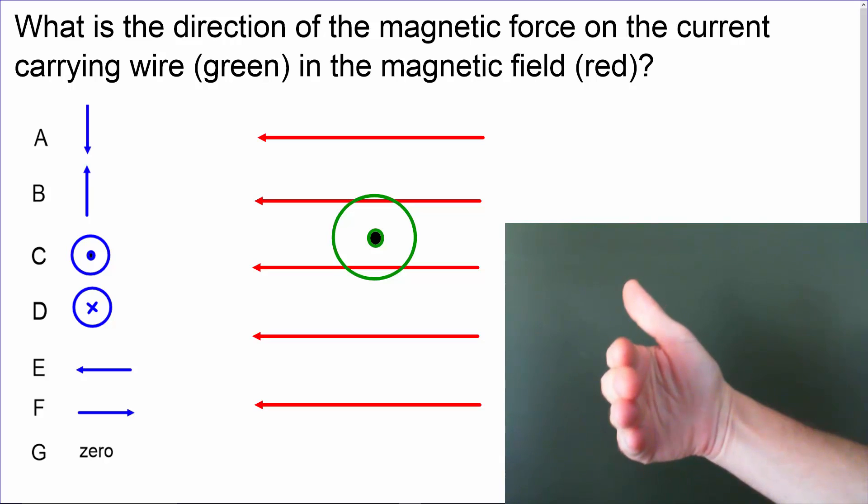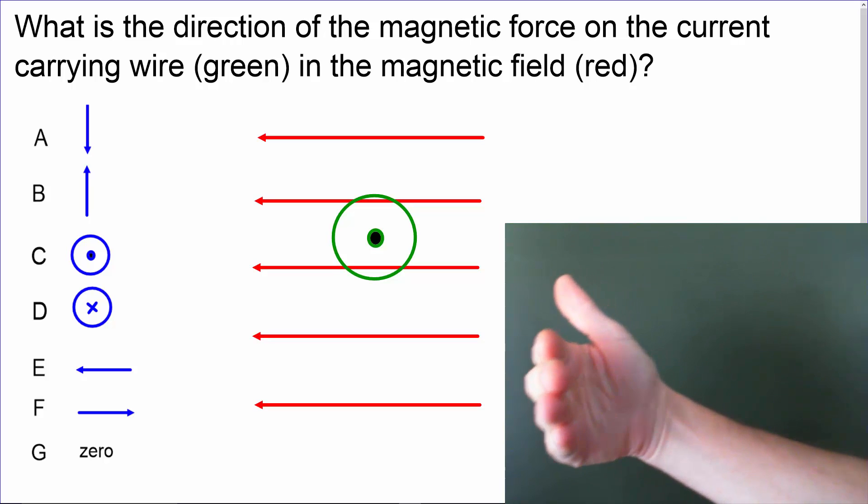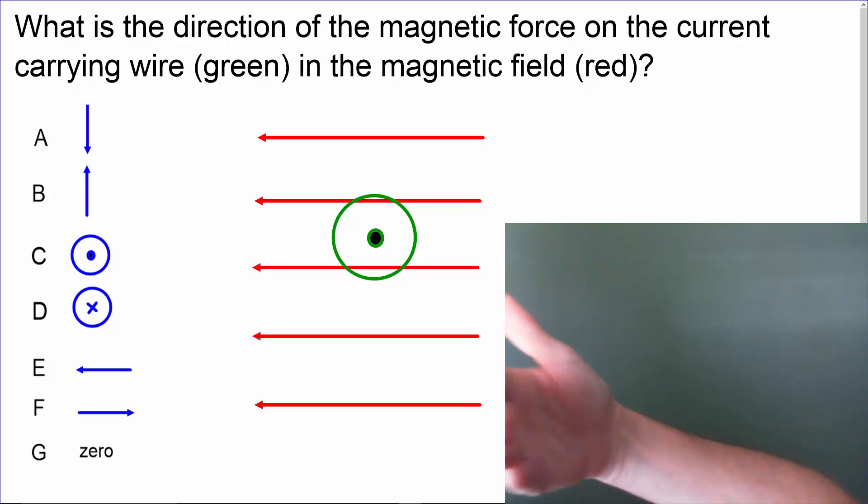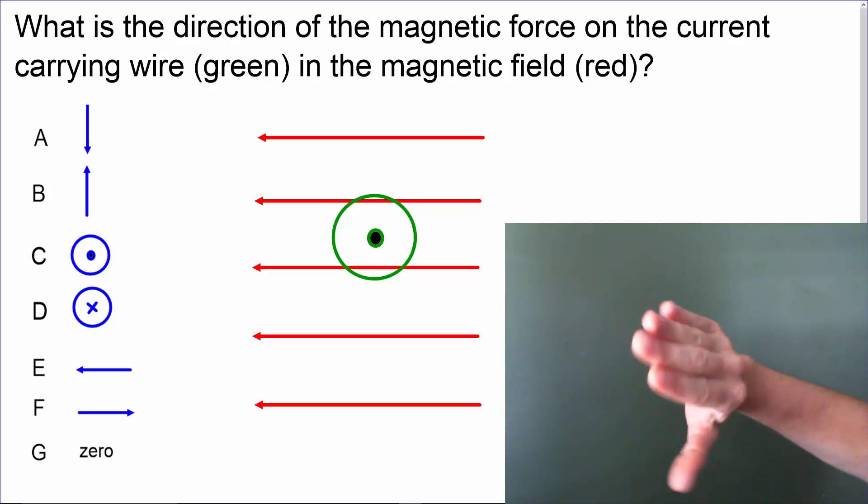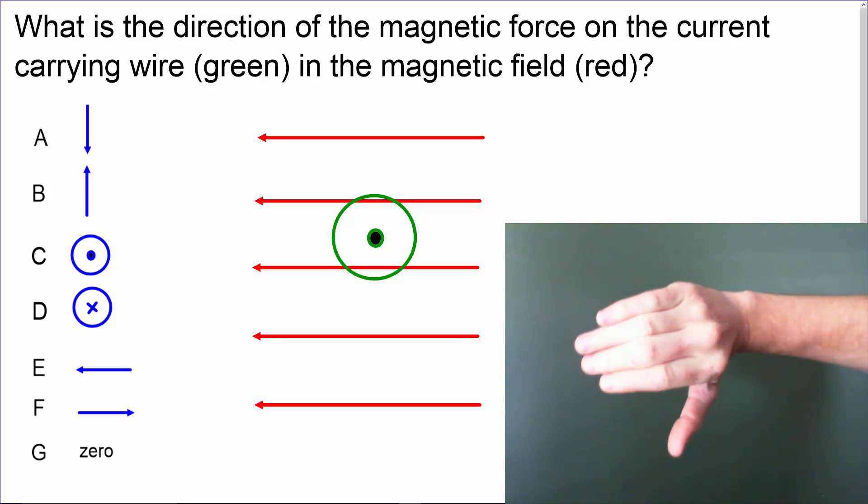Next, we need to curl our fingers in the direction of the magnetic field. Now, the magnetic field is pointing to the left on your screen. So what I'm going to do is turn my hand and then curl my fingers in that direction.